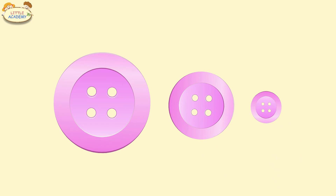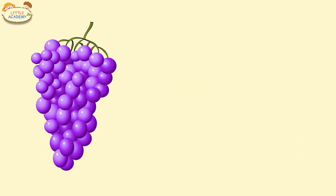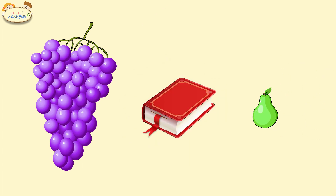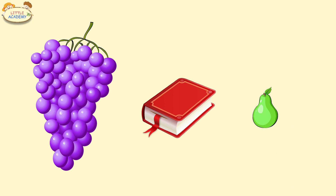Let's take another look. The grapes are large. The book is medium. And the pear is small. So this object is large, this one is medium, and this one is small.